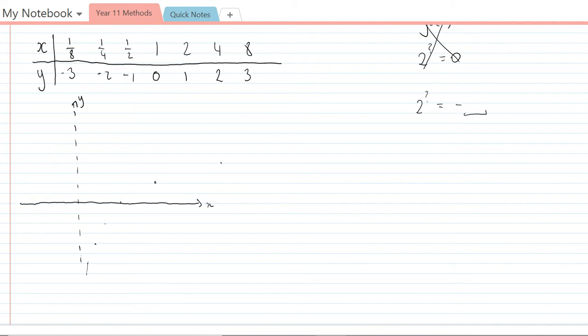So the shape of this graph is going to go something like that. And it has an intercept at 1, 0.